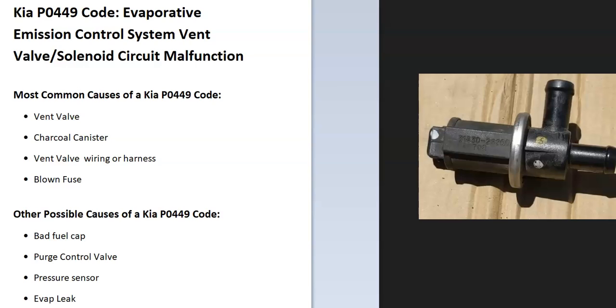Today I'm talking about a Kia with the P0449 code — what it is and how you go about fixing it. So what is a Kia P0449 code? It's an evaporative emission control system vent valve solenoid circuit malfunction.